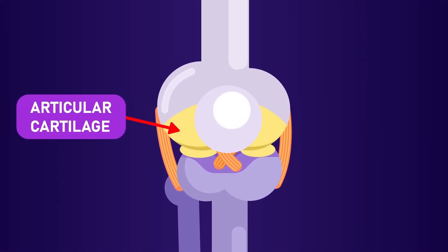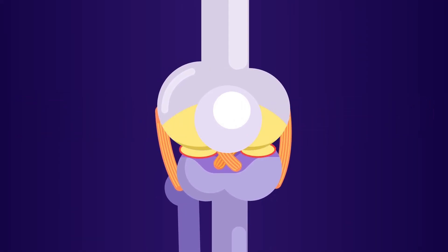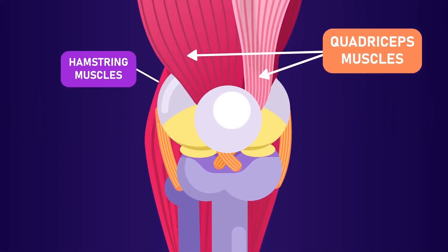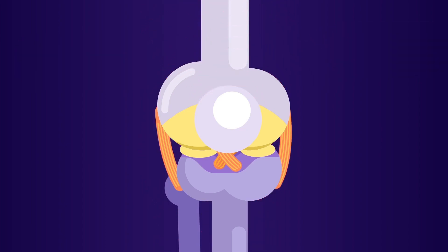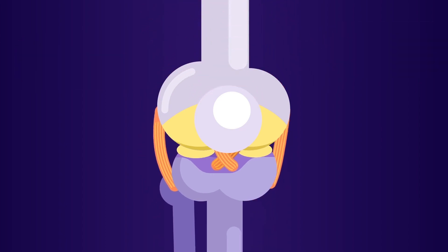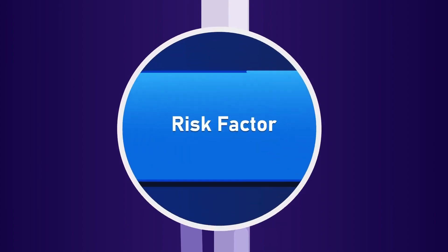Lastly, the cartilage, such as the articular and meniscus, along with the quadriceps and hamstrings muscles, are there to help articulation of our knees. So yes, the ACL is the part that is affected by the injury.